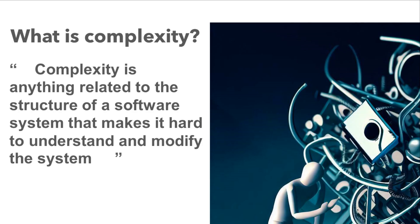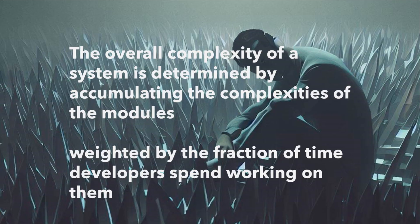In his book A Philosophy of Software Design, John Ousterhout defines complexity as anything related to the structure of a software system that makes it hard to understand and modify the system. When looking at a whole system, the complexities of individual modules accumulate and contribute to the overall complexity.